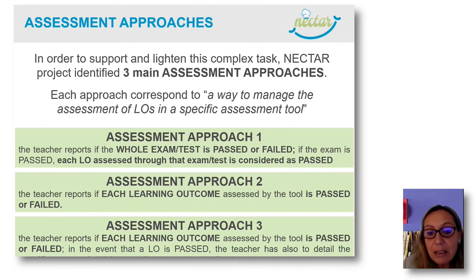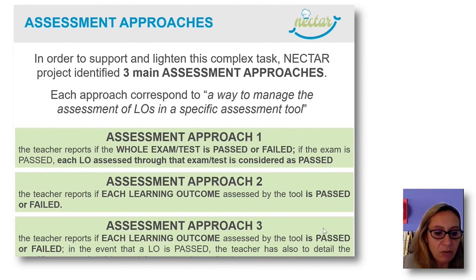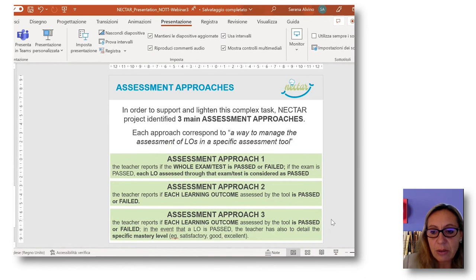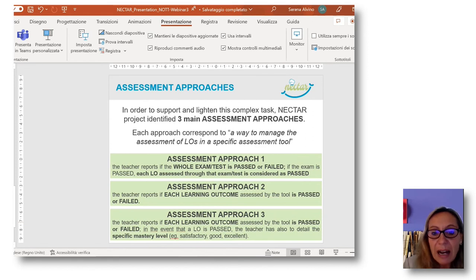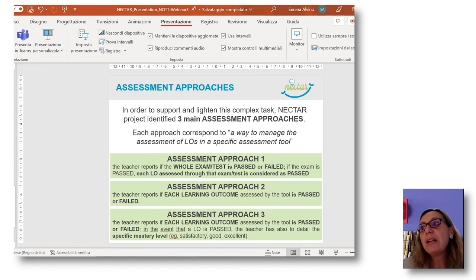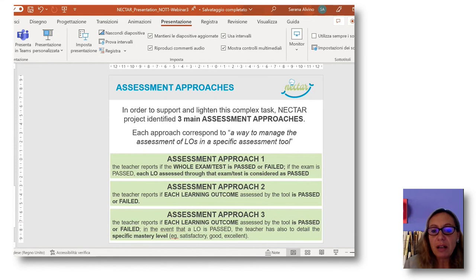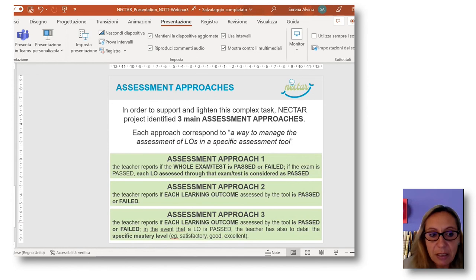Assessment approach three is similar to approach two, but in the event that a learning outcome is passed, the teacher has the possibility to define a level of mastery — for instance, satisfactory, good, or excellence. So there is a qualitative rating on a qualitative scale of the level of mastery of each specific learning outcome.